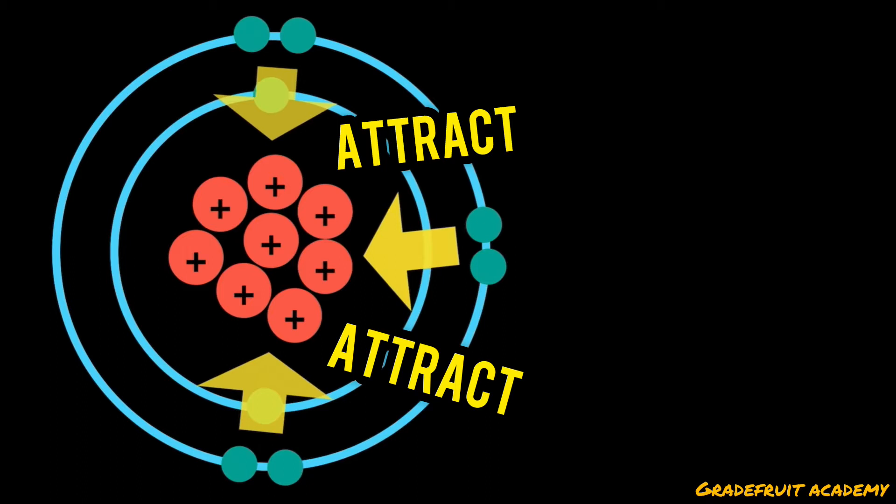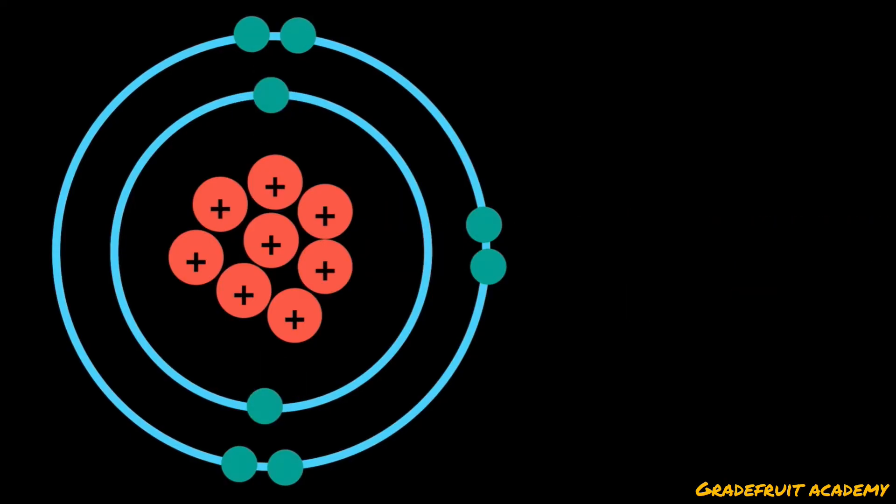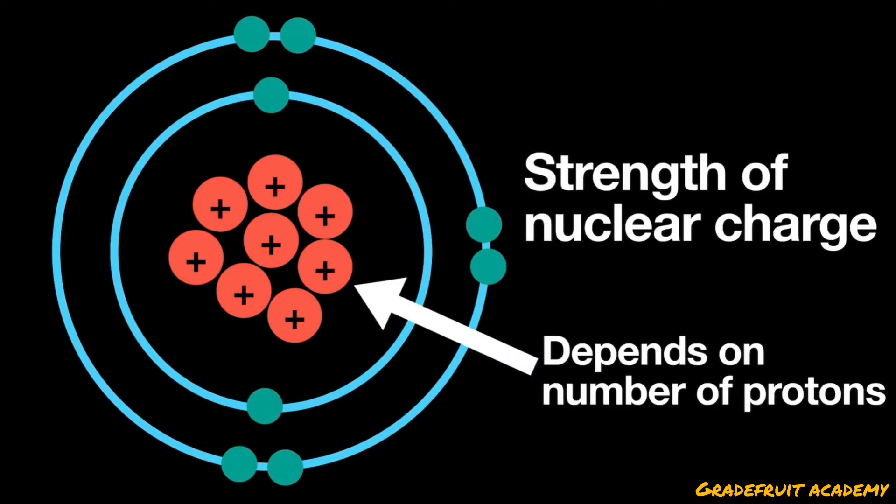The positively charged nucleus will attract the negatively charged valence electrons towards itself, which causes a contractionary effect on the atom. Hence, the strength of the nuclear charge depends on the number of protons present in an element.